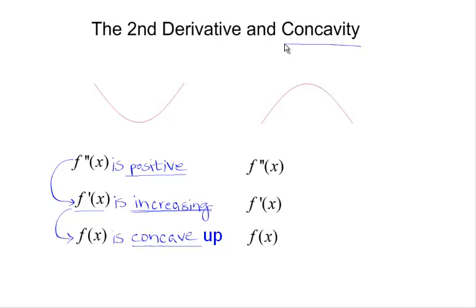We can remember concave up means shaped like a cup. So regardless of where they start us, if they tell us f is concave up, that's the same as telling us f prime is increasing and f double prime is positive. If they start by telling us f double prime is positive, we get additional information for free: f prime is increasing and f is concave up.